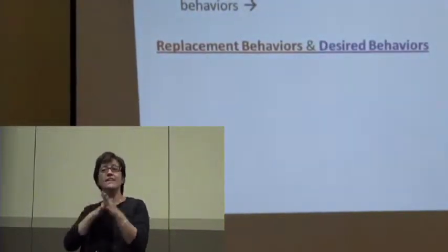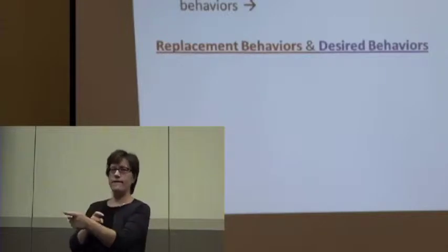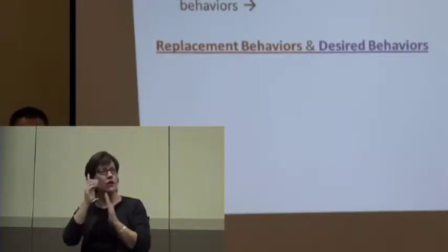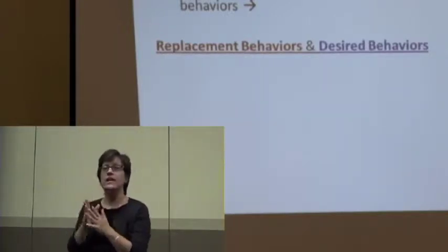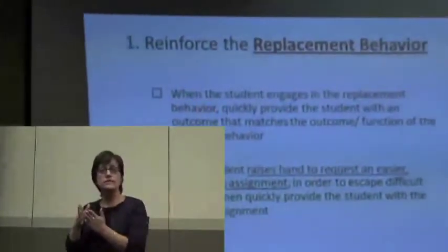For the desired behaviors — they might be doing single-digit addition but working hard based on accommodations, progressing to double-digit. Make sure those pay off too. For replacement behavior reinforcement, quickly provide it based on the function. When they ask for a break, give them the break — not a soda. If they ask for an easier task, give them that.